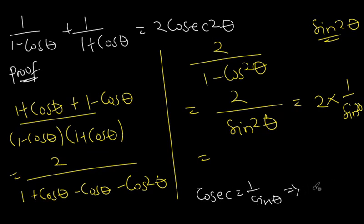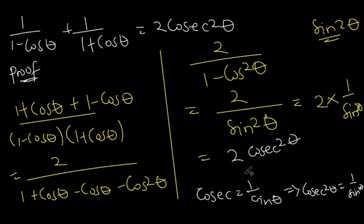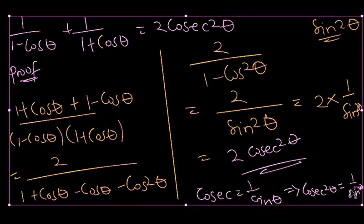Two over sin squared theta can be written as two times one over sin squared theta. Since cosec theta equals one over sin theta, it follows that cosec squared theta equals one over sin squared theta. So this expression equals two cosec squared theta, which is exactly what we were asked to prove. That's the first example of using basic trigonometric identities to solve problems.